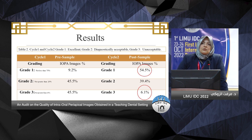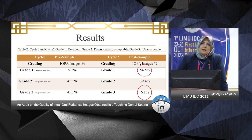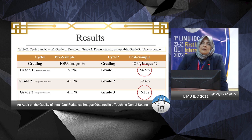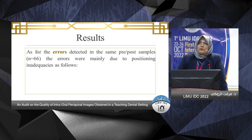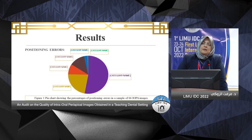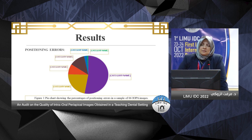In Grade 1, the pre-sample (first cycle) showed approximately 9%, with a quite significant increase in cycle two. Grade 2 remained similar between cycles. Grade 3 dropped substantially from 45% to 6%. For errors detected, cone cut had the lion's share at approximately 63%.